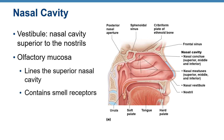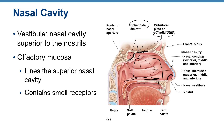Looking at the diagram: the external nose and external nares are visible, then the nasal cavity. The roof includes the ethmoid bone and sphenoid bone. The floor is the hard palate and soft palate, with the uvula — a tissue structure — located at the back.